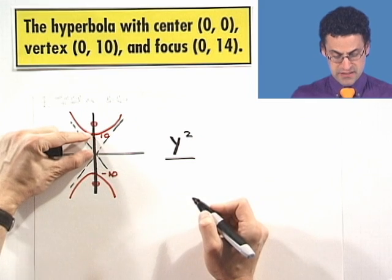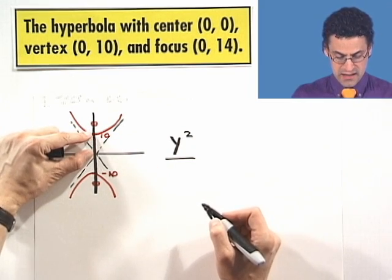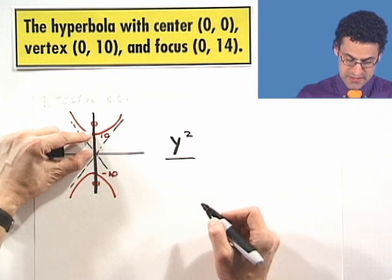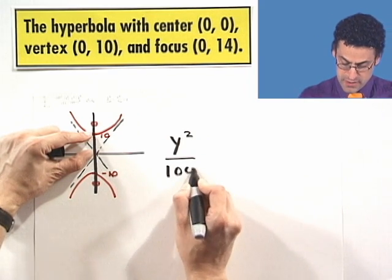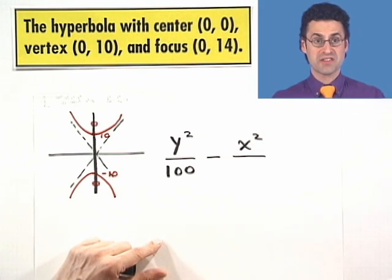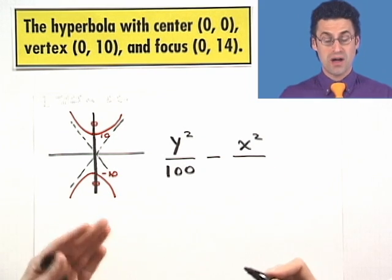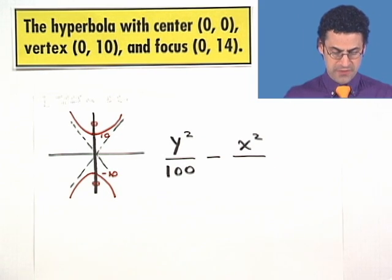divided by, well, I just have to look at this length. So I look at one of the vertices, which I know is 10. And so I've got this 10-squared, which is 100. Now a minus, and now I'm going to look at the x variable. So I have x-squared divided by, oh, now I need to know b. I need to know the co-vertex. How am I going to find that?